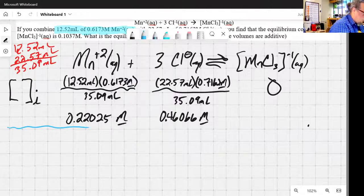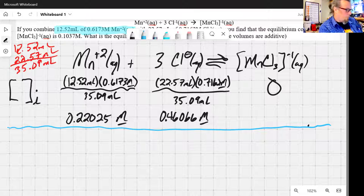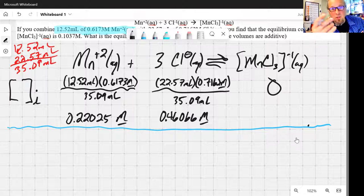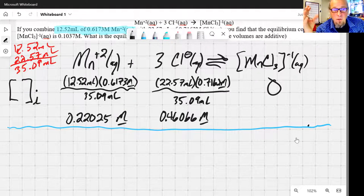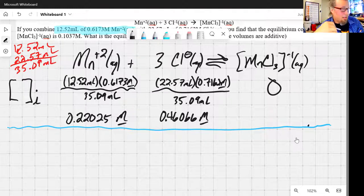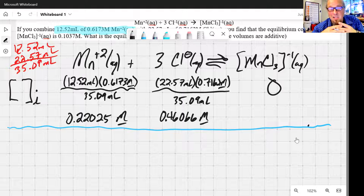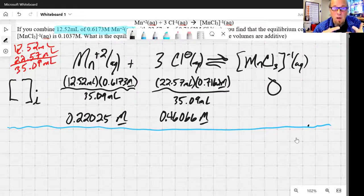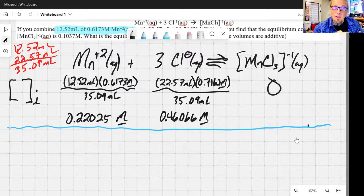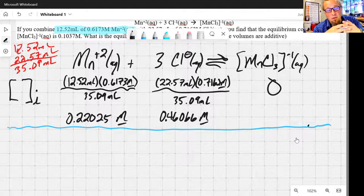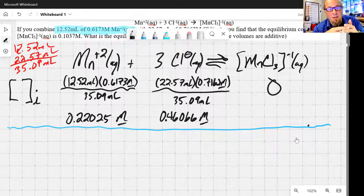Alright. So that is my initial set of concentrations. Let me put a little divider in here just so that we can keep things separated. Next, I want to think about what's going to happen when I let this equilibrium occur. What I've done right now is I've kind of set up something that's not realistic. I've set up a system where I've mixed everything together, but somehow I'm not letting the reaction occur.